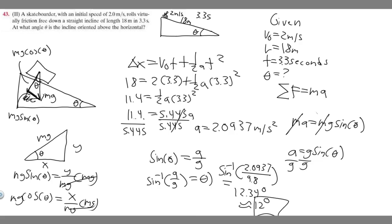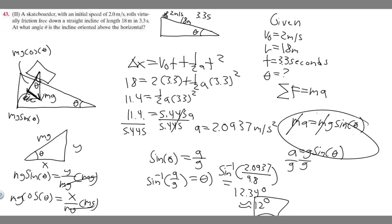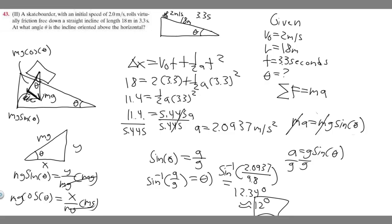The key takeaway from this problem is that mg times the sine of theta equals ma, as long as it's frictionless — and they tell us it's frictionless. Just know your theta is going to be the same as the incline angle. I'd recommend memorizing that formula: ma equals mg times the sine of theta. Your answer to this problem is 12 degrees.